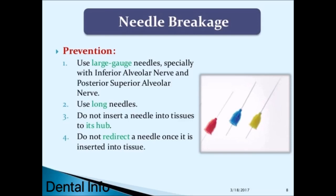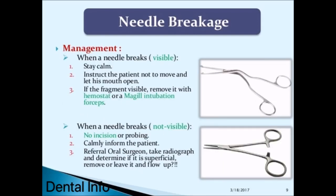Prevention of needle breakage: use large gauge needles, especially with inferior alveolar nerve and posterior superior alveolar nerve blocks; use long needles; do not insert a needle to its hub; do not redirect a needle once inserted into tissue. Management when a needle breaks and is visible: stay calm, instruct the patient not to move and keep his mouth open, and if the fragment is visible, remove it with a hemostat or McGill intubation forceps.